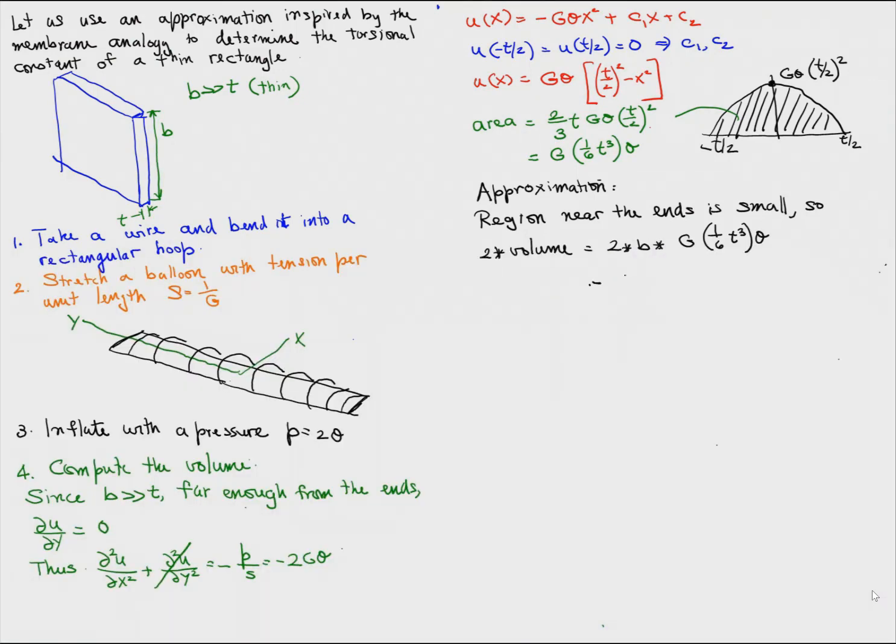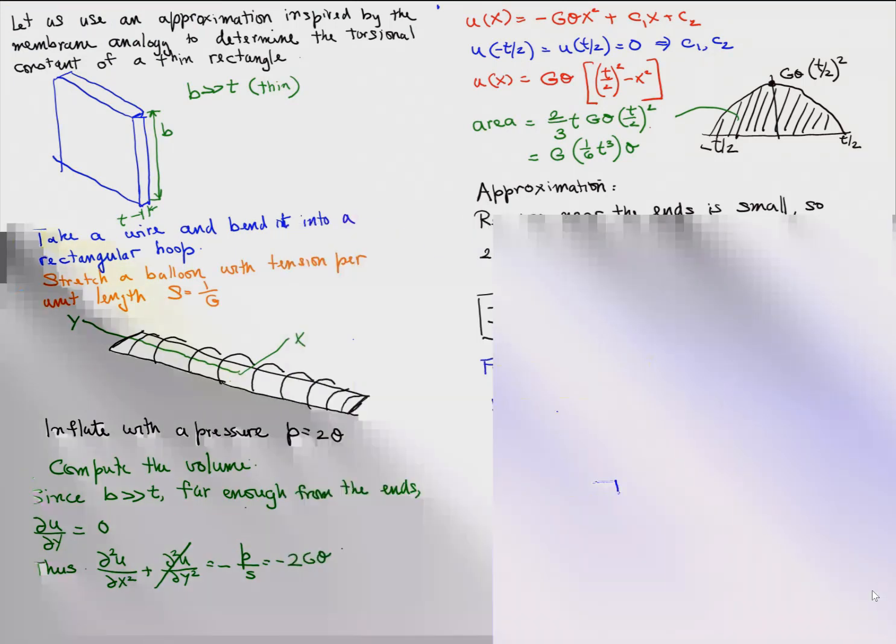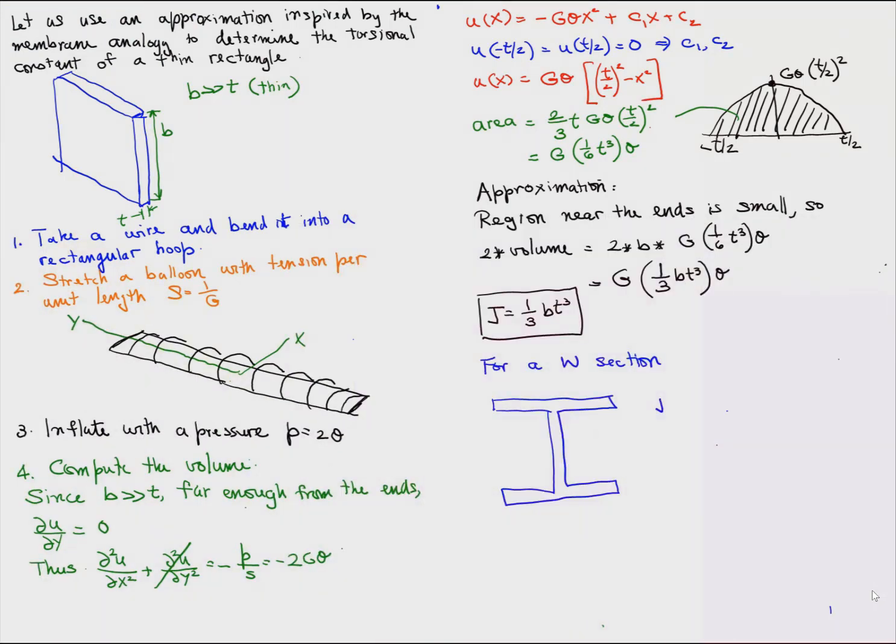Now the approximation we make is because B is much larger than T, the region near the ends is so small that the total volume is simply the deflected area in the middle times the length. And if we do that, we get J equals one-third BT cubed.